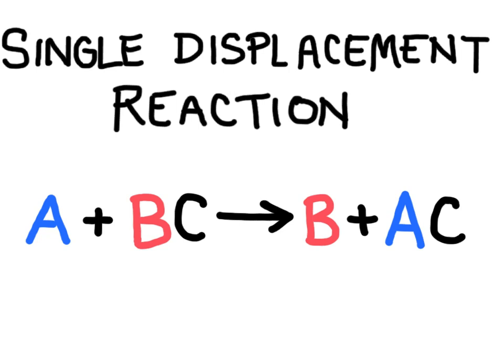In this video we're going to talk about predicting the product of a chemical reaction, specifically looking at single displacement reactions. These are also known as single replacement reactions. The general form is: an element A all by itself reacts with a compound — two or more elements combined — and the lone element bumps out one of the elements in that compound.